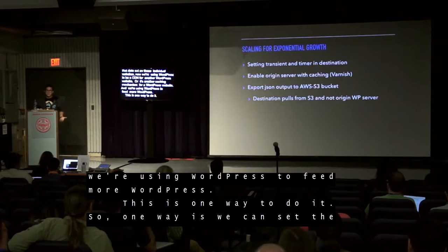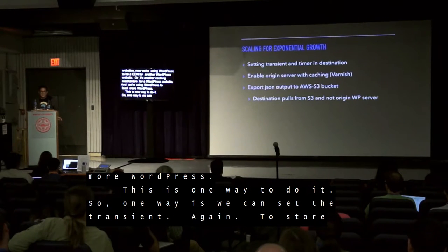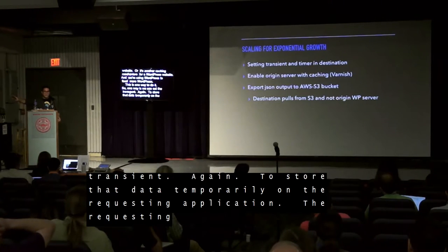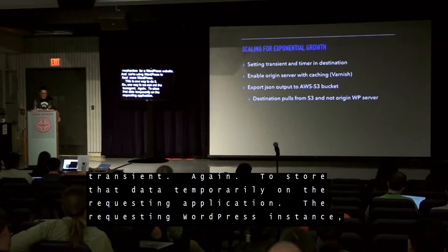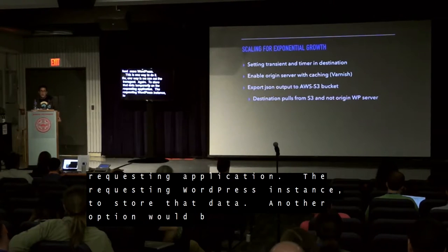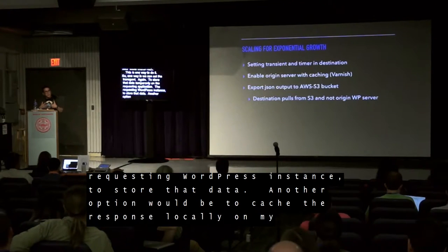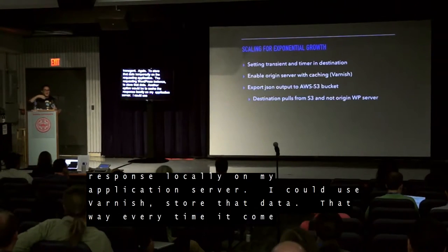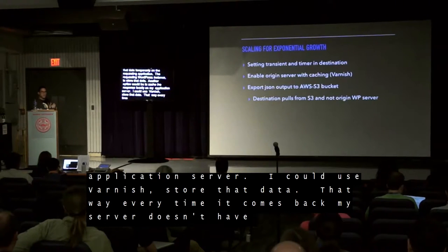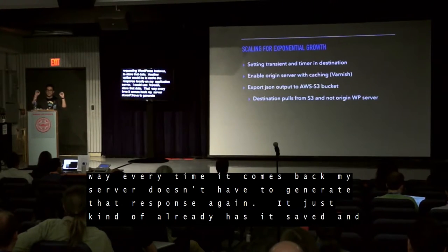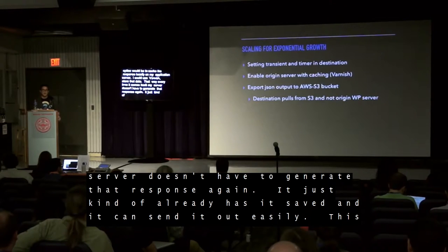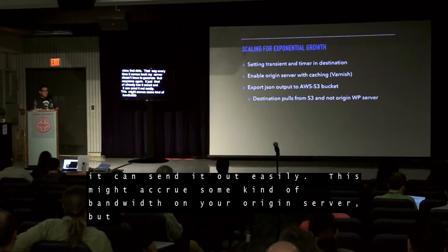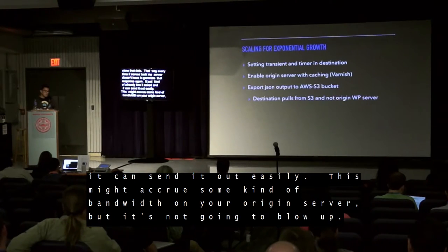One way is to set a transient to store data temporarily on the requesting WordPress instance. Another option would be to cache the response locally on your application server using something like Varnish, so every time a request comes back the server doesn't have to regenerate that response — it already has it saved and sends it out easily. This might accrue some bandwidth on your origin server, but it's not going to blow up.